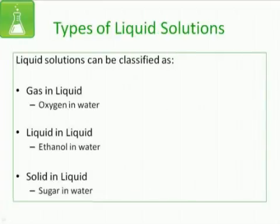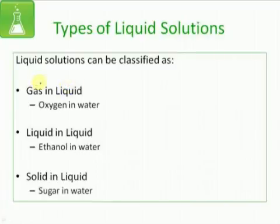The second type of solutions are the liquid solutions, in which the physical state of the solvent is liquid and the solute can be gas, liquid, or solid. The first type is gas-in-liquid solutions, where gas is the solute and the solvent is in liquid state. Its example is any gas dissolved in water, for example, oxygen in water or carbon dioxide in water, as in the case of aerated water.